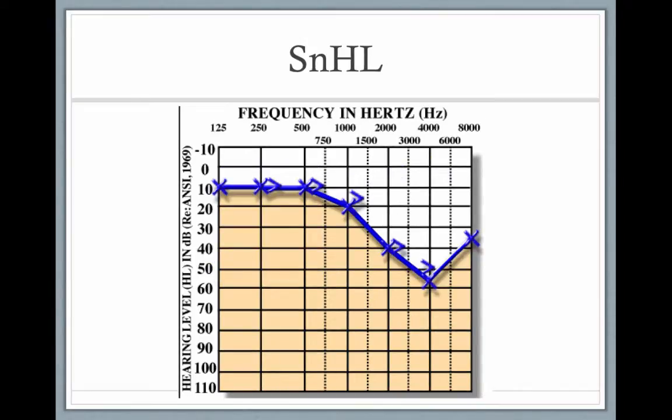With sensorineural hearing loss — this is a left ear sensorineural hearing loss — the air conduction scores and the bone conduction scores are almost exactly the same, showing the same degree of impairment for both air and bone conduction. This is a sensorineural hearing loss, likely a cochlear hearing loss.